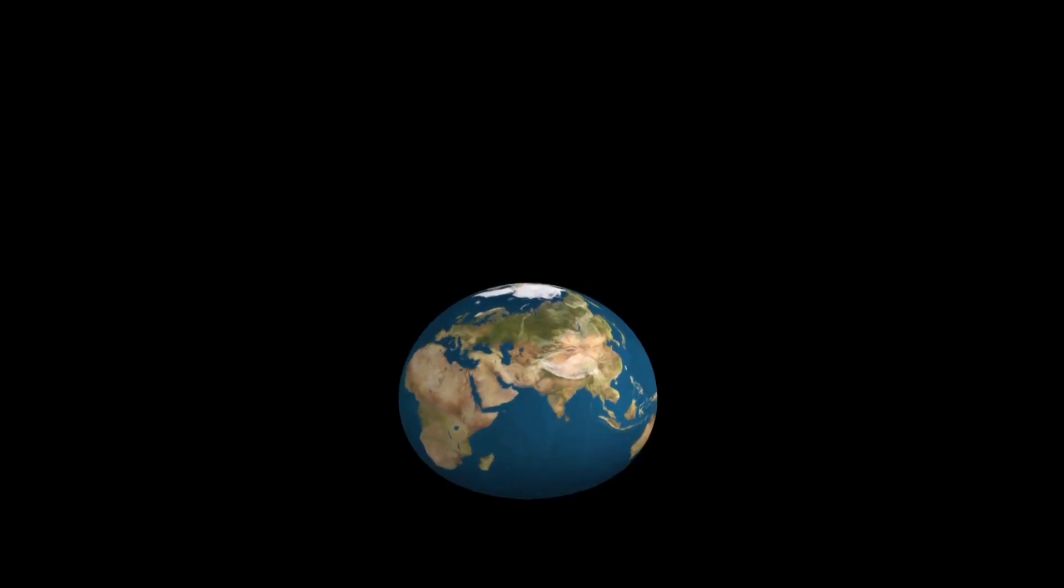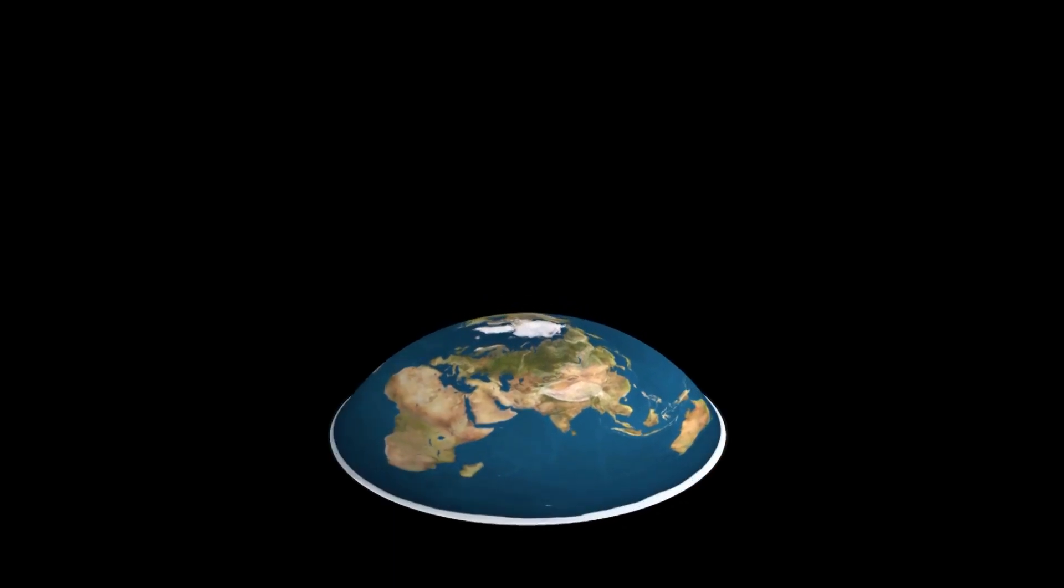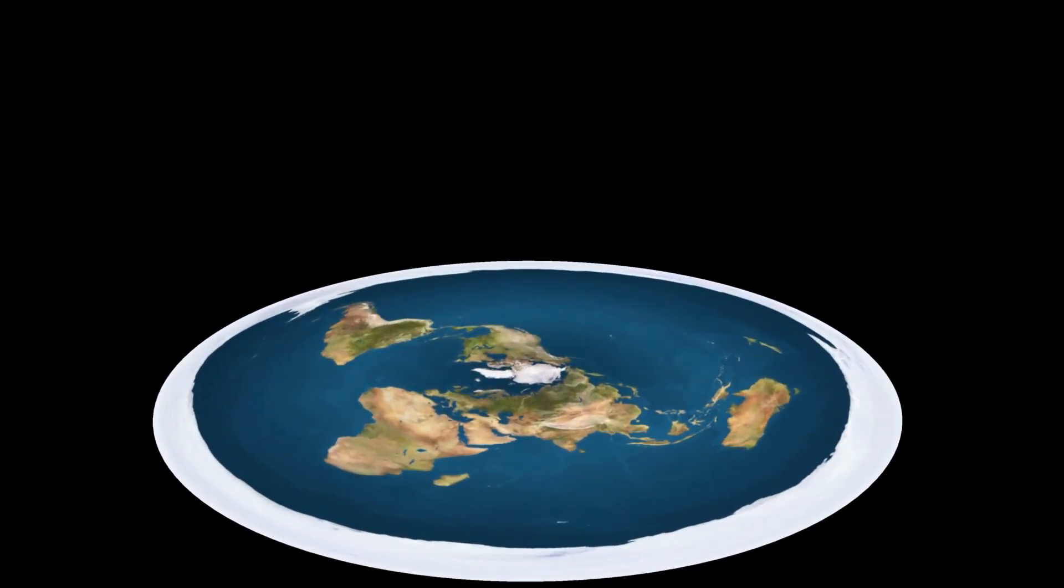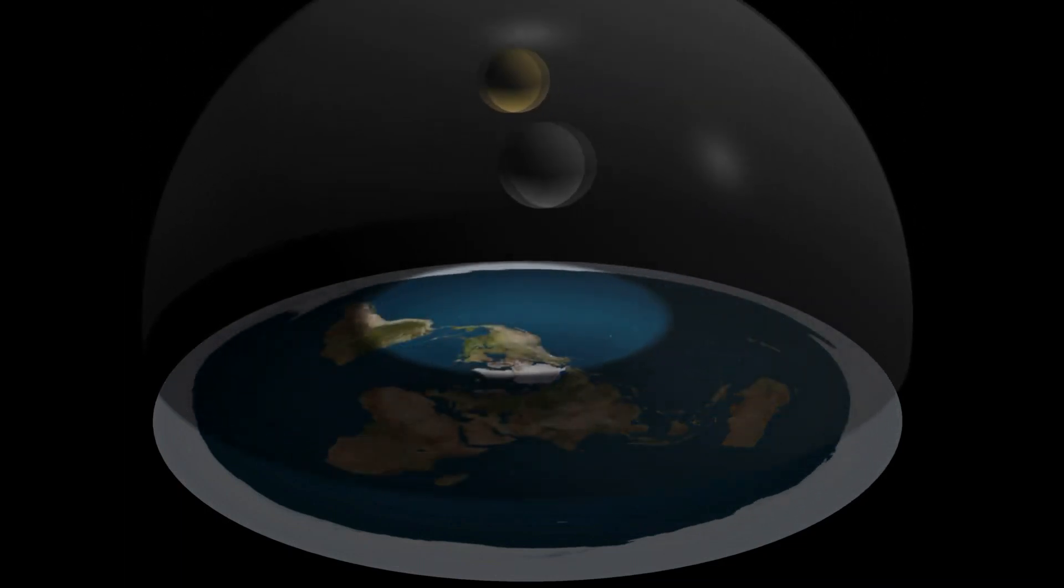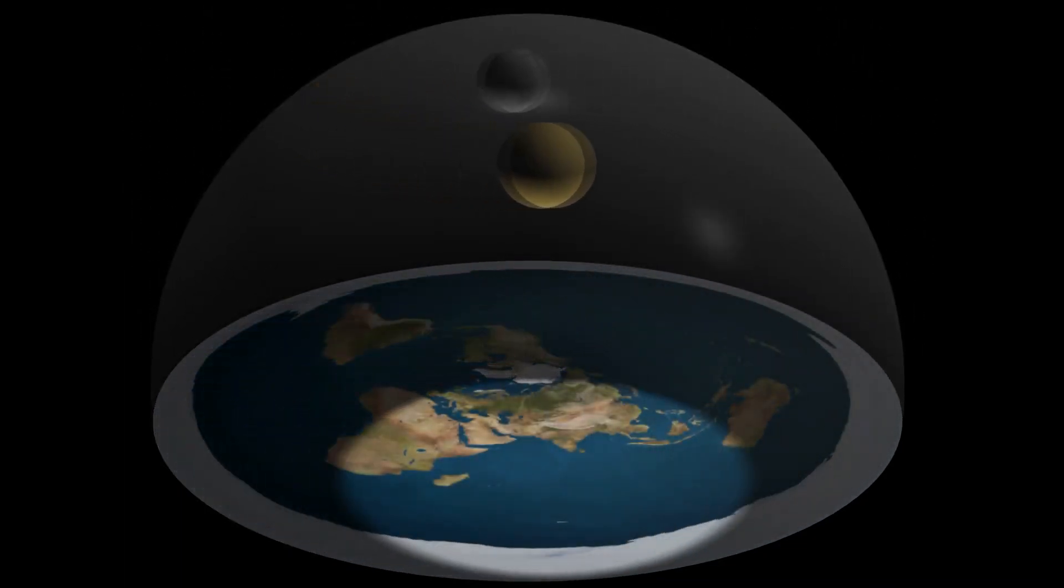These people claim that the Earth is a flat disk with Antarctica acting as an ice ring around the outer edge, and that the sun and moon are somehow hovering some 3000 miles above in a circle, with the night sky contained within a gigantic rotating dome encapsulating the earth, the so-called firmament.